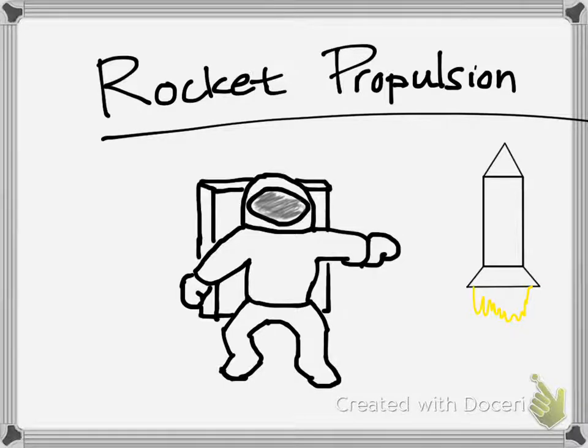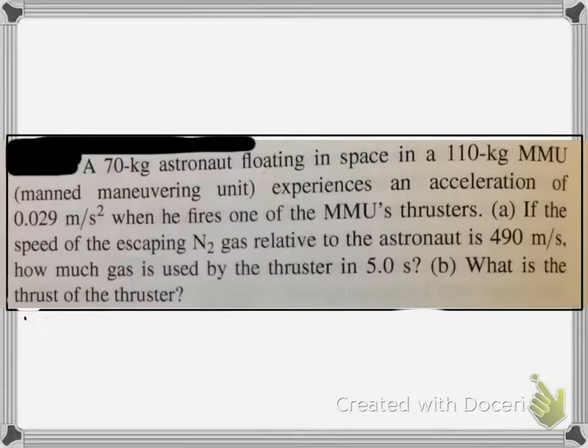Just imagine this astronaut and they're wearing those manned maneuvering units, that huge box thing kind of on the back that helps astronauts maneuver in space without being connected directly to maybe the shuttle or whatever. So, there's going to be a problem involving that. Here's this problem.